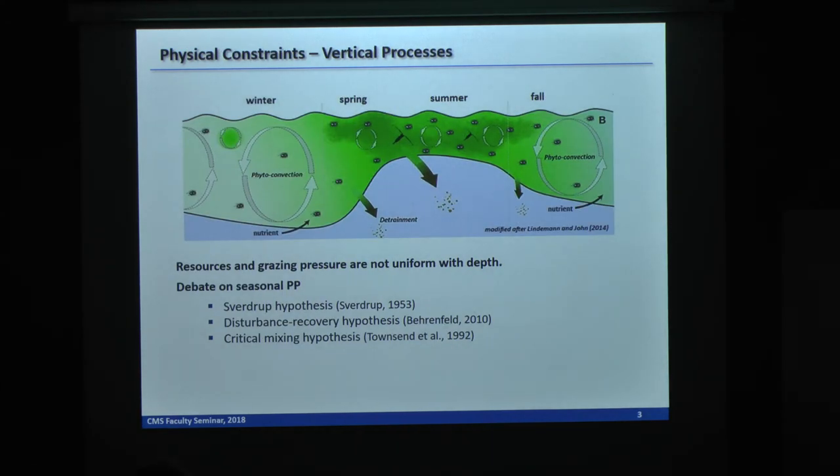The phytoplankton production are controlled by physics in three dimensions. Along the vertical dimension, the living resources and grazing pressure are not uniform over depth, which means we have nutrients that increase with depth, but light decreases with depth. So based on that, phytoplankton growth is based on the trade-off between light and nutrients. If we also consider grazing pressure over the seasonal cycle, there are more complex dynamics here.